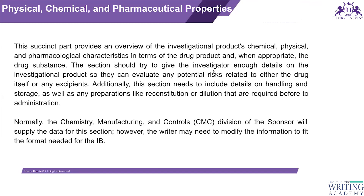The next section covers Physical, Chemical, and Pharmaceutical Properties. You must include a description of the investigational product substance, including the chemical and structural formula, a brief summary of relevant physical, chemical, and pharmaceutical properties, and safety measures to be taken while conducting the clinical trial with this investigational product. You must also describe the formulation to be used.